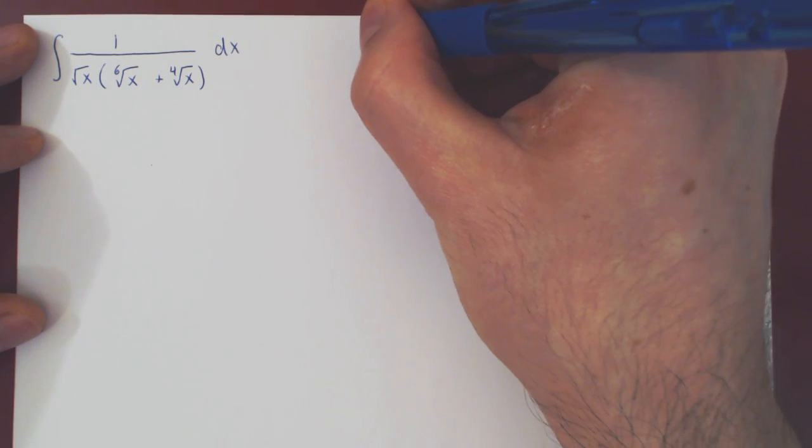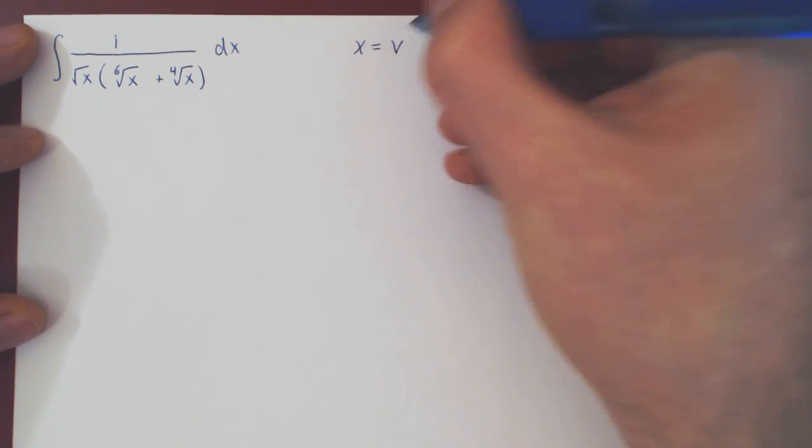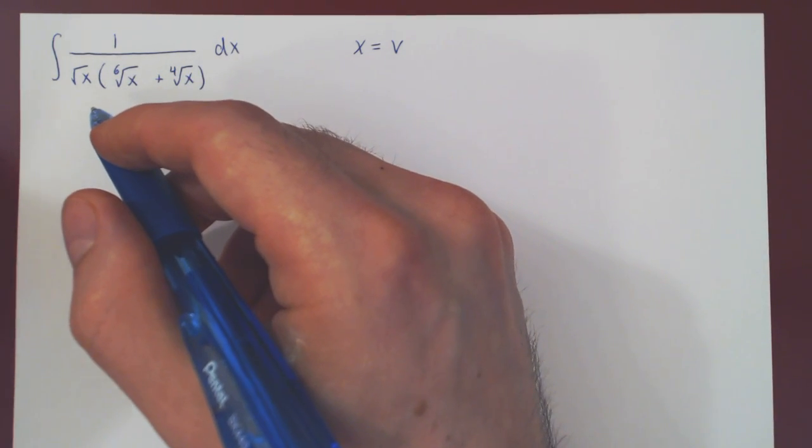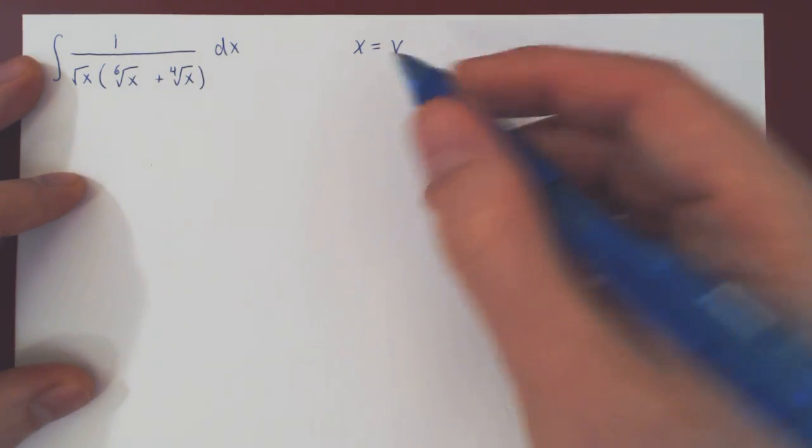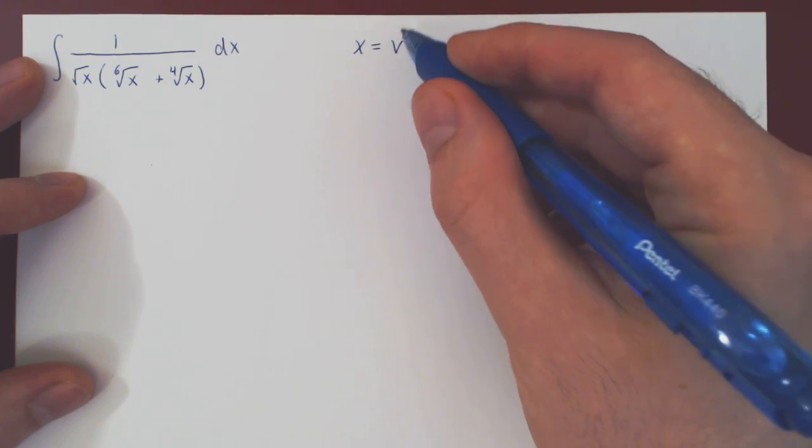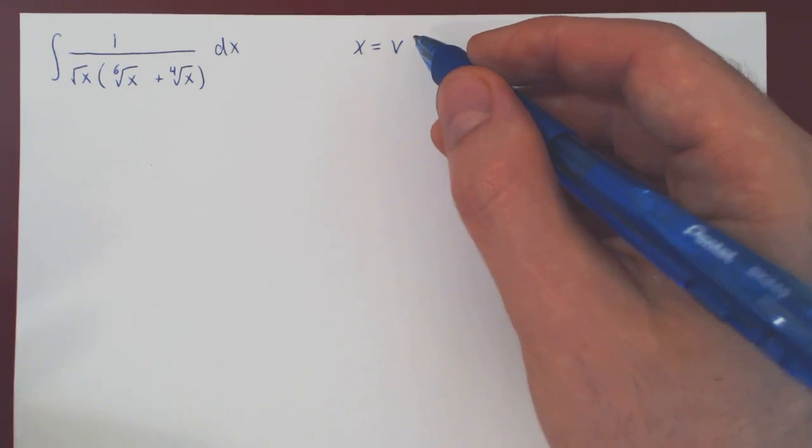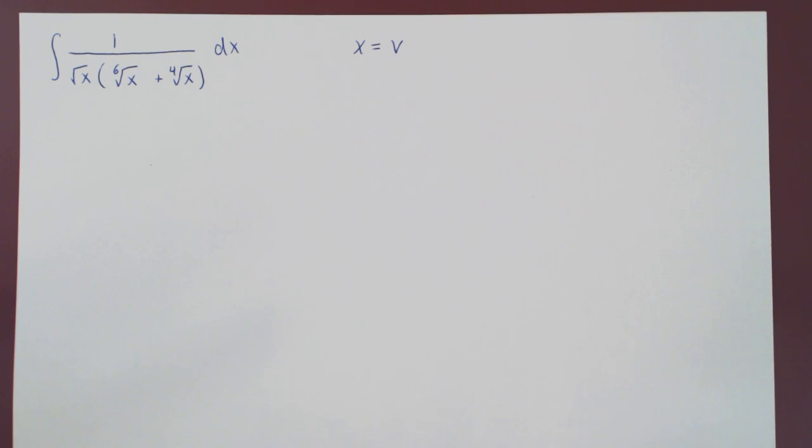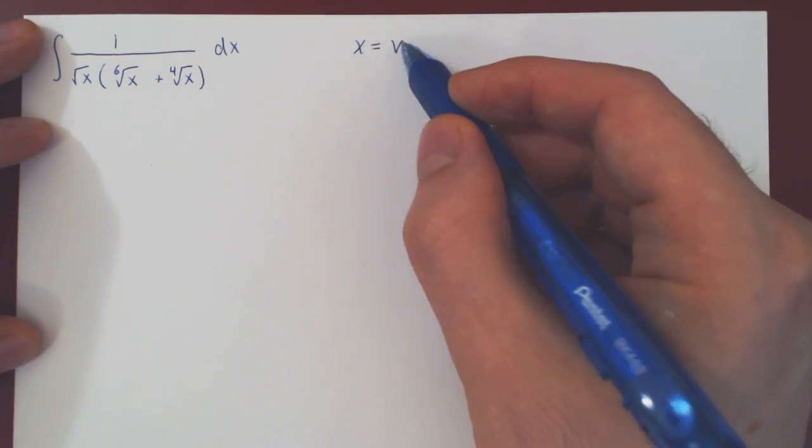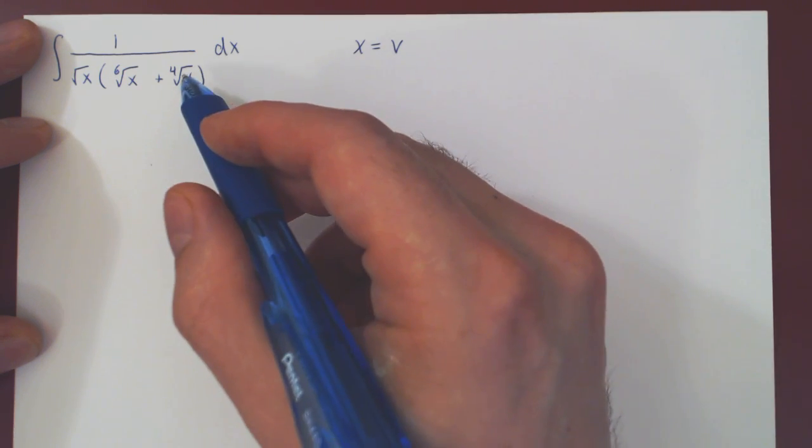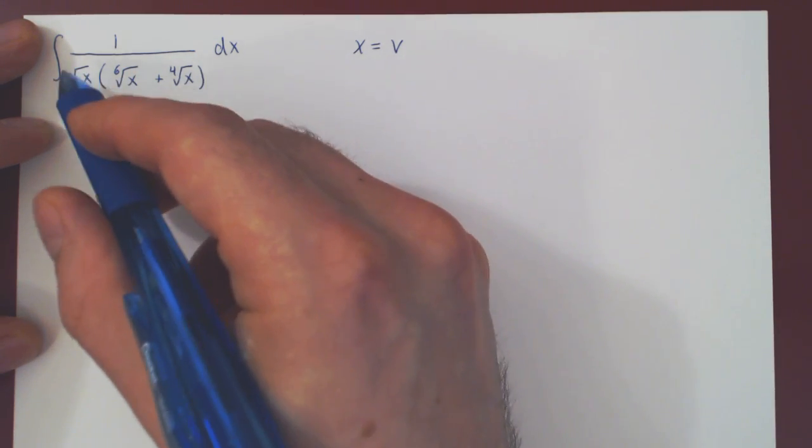So we want to let x be equal to which power of v? And the idea is we want the smallest power that will eliminate every fractional power of x. If you take the power of v to be too large, you will artificially inflate the powers in your rational function and therefore make the problem more difficult.